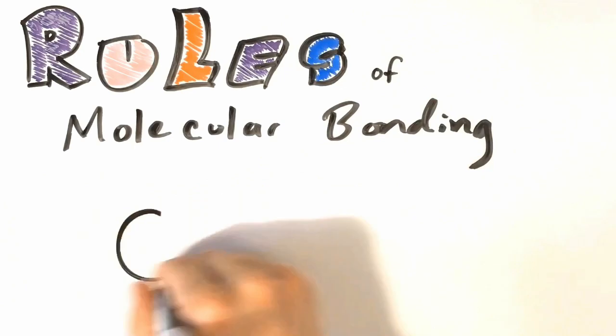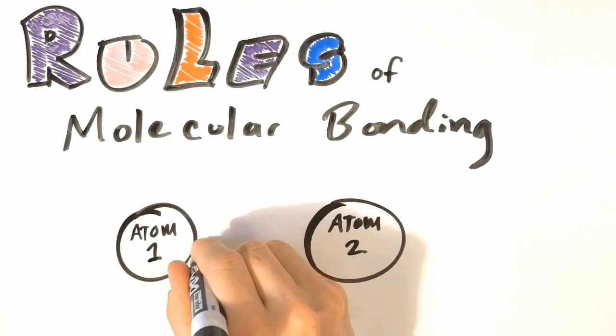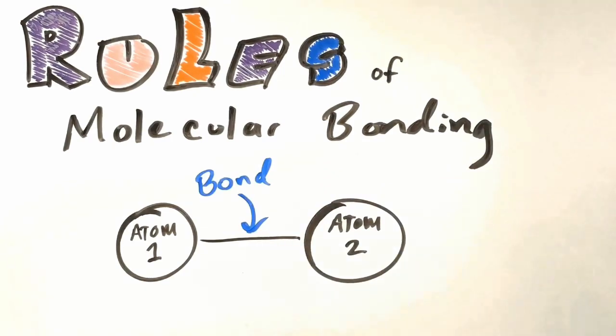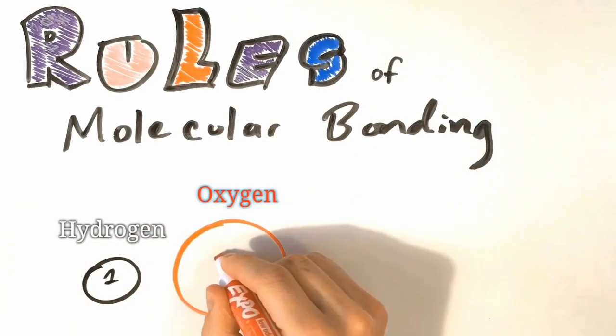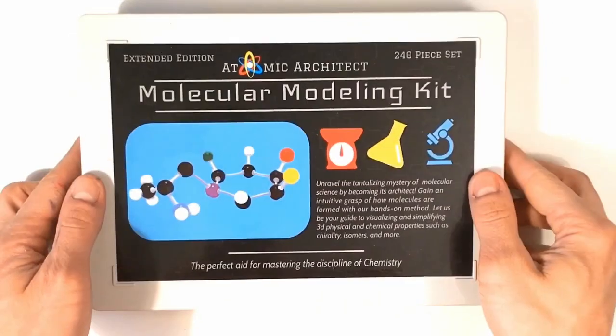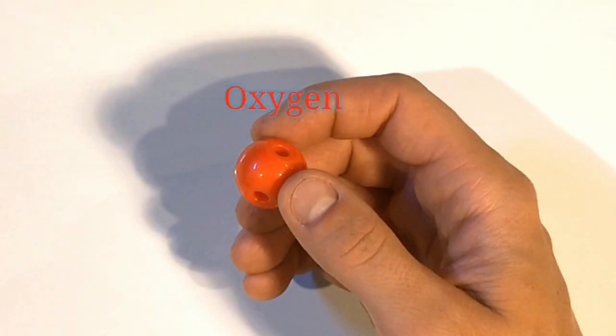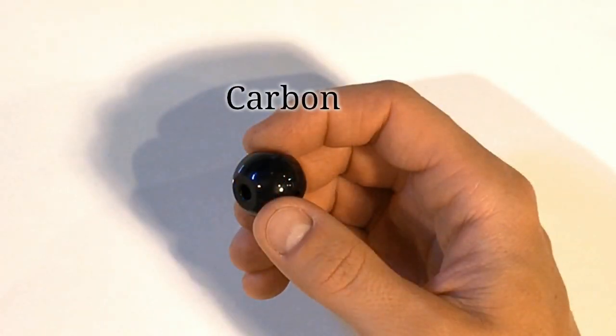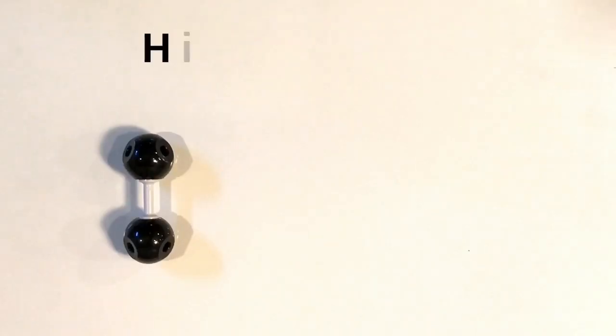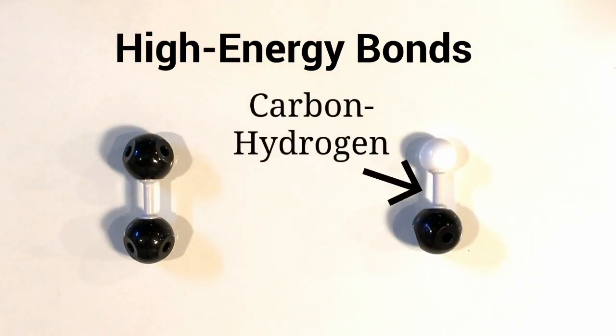Let's quickly review a few rules of molecular bonding. Atoms form connections that we call bonds. Hydrogen forms one bond, oxygen forms two bonds, and carbon forms four bonds. And this is why in most molecular modeling kits, hydrogen has got one connection, oxygen has two connections, and carbon has got four connections. And some combinations of these connections form high energy bonds, such as carbon-carbon bonds and carbon-hydrogen bonds.